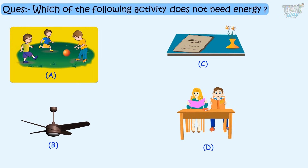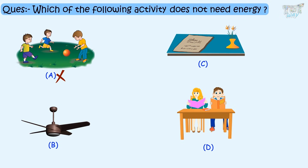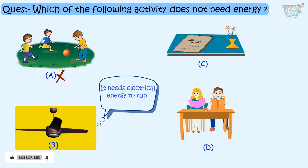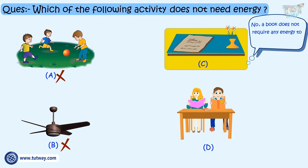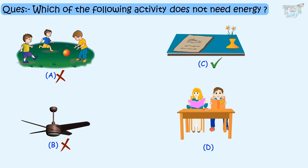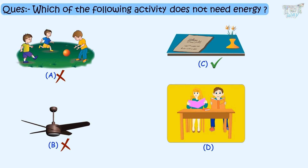Now, four activities are shown — which one does not need energy? Boys are playing — they definitely need energy for playing, and they need food for that. Second is a running fan — it definitely needs electrical energy. Third is a book lying on the table — does it need energy to lie on the table? No, a book doesn't require any energy to lie on the table. The fourth is a boy reading a book — he definitely needs energy to read. So the answer is option C.